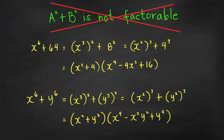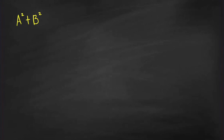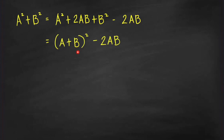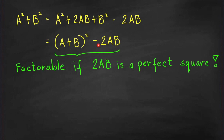Now, what if A squared plus B squared is not a sum of two cubes? How do we determine whether it is factorable or not? Let me share with you a strategy — you may call this the completing the square method. The idea is to write A squared plus B squared as a difference of two squares by completing the square. We add 2AB to make a perfect square trinomial, and then subtract 2AB to balance the expression so it remains equal to A squared plus B squared. The trinomial A squared plus 2AB plus B squared is a perfect square, so we write it as the square of (A plus B) minus 2AB. It is clear from this expression that we can factor it if 2AB is a perfect square.